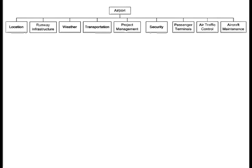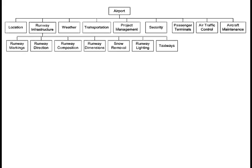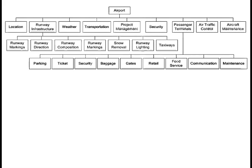Now we have some major pieces of the airport, but we're still at a level that is too high to comprehend and manage the activities necessary to achieve the goal. Each of these would need to go to the next level of detail. For example, if you broke down runway infrastructure, you'd have things like runway markings, runway directions, material composition, dimensions, snow removal, runway lighting, and taxiways.